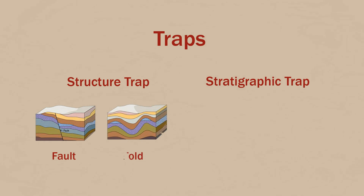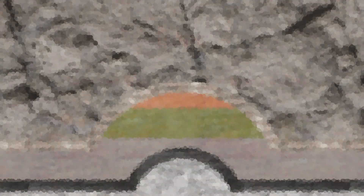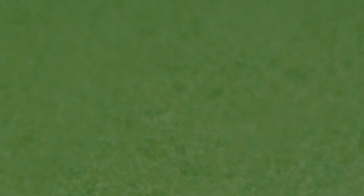Traps might be structural, such as faults and folds. They might also be stratigraphic, such as unconformities and reefs. If hydrocarbons don't face any trap rock during migration, they keep moving upward until they exit to the surface, resulting in a hydrocarbon surface pool called seepage.